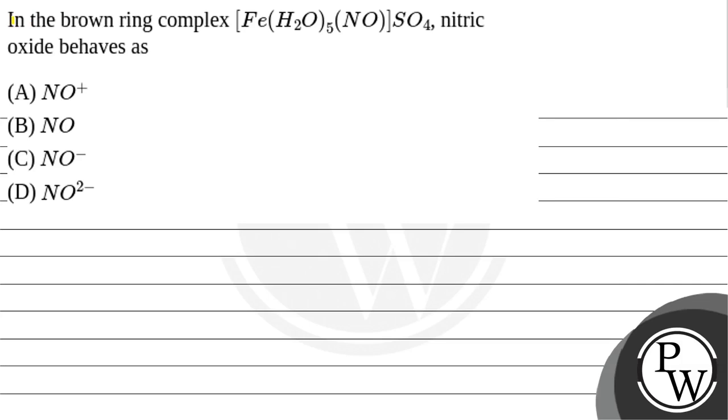Let's read the question. In the brown ring complex [Fe(H2O)5(NO)]SO4, nitric oxide behaves as: option A, NO positive; B, NO; C, NO negative; D, NO2 negative.